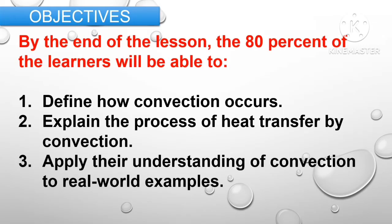For the objectives, by the end of the lesson, 80% of the learners will be able to: first, define how convection occurs; second, explain the process of heat transfer by convection; and third, apply their understanding of convection to real-world examples.